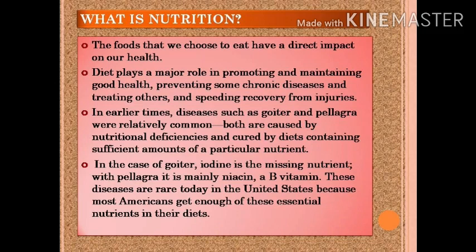In the case of goiter, iodine is the missing nutrient — the cause of goiter is a deficiency of iodine in our food. With pellagra, the missing nutrient is mainly niacin, a B vitamin. These diseases are rare today in the United States because most Americans get enough of these essential nutrients in their diets, so these diseases do not have much impact and cannot commonly be seen in the United States these days.